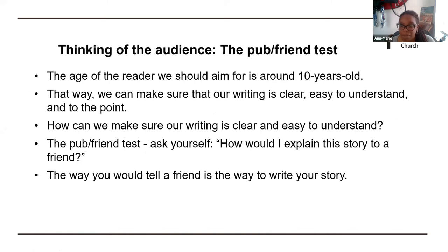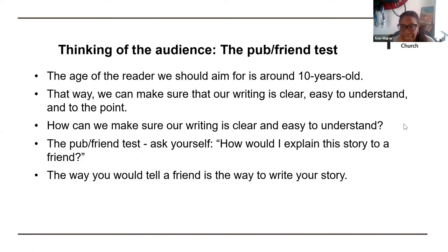The person who wrote that Gillingham story wouldn't sit in a cafe and tell their friends that story the way it was written. What they'd say is, 'Guess how many blankets we've knitted!' So what we want to remember is the pub friend test. The age of the reader we should aim for is around 10 years old — that way we can make sure our writing is clear, easy to understand and to the point. How would you explain this story to a friend across the cafe, at church, in a pub, over a glass of wine? That's the way you want to write your story.